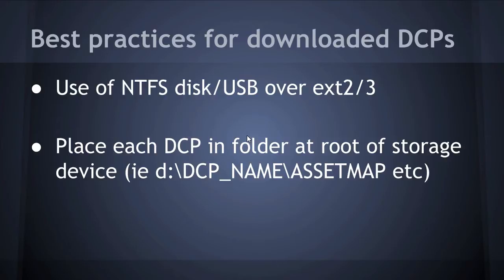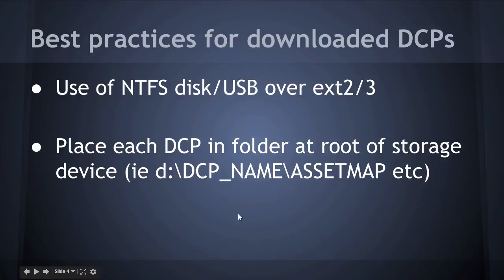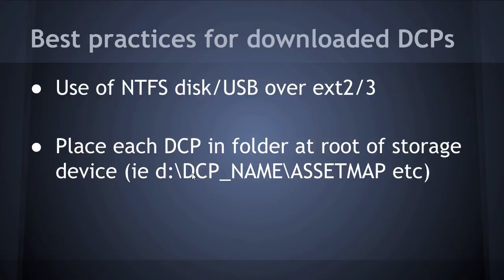When placing files on the disk, you want to make sure that you place each DCP in its own directory. For example, at the root of the drive, you'd have a name representing the DCP, and the asset map and all the other files will be placed under there. So you would have, for example, the D drive with different named folders for different DCPs. If you put DCPs any deeper than that, they may not be read. If you put asset maps directly into the root directory, they may not work either. This is the best practice and should always work.